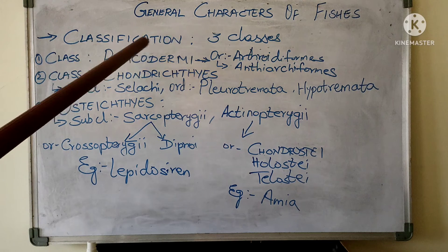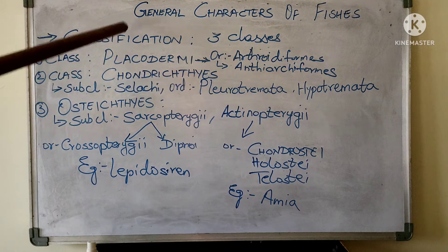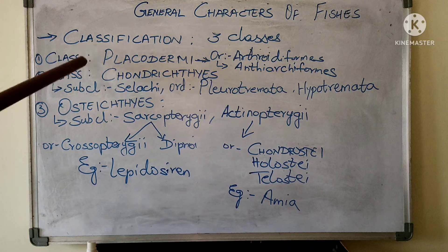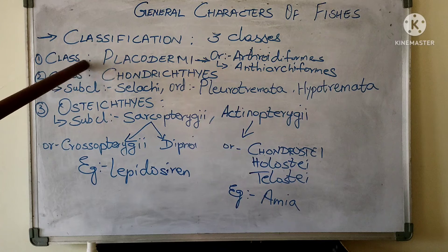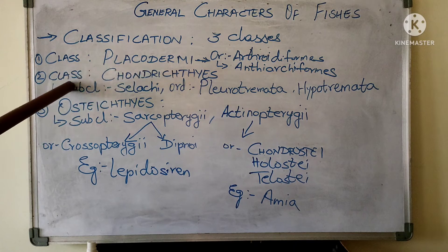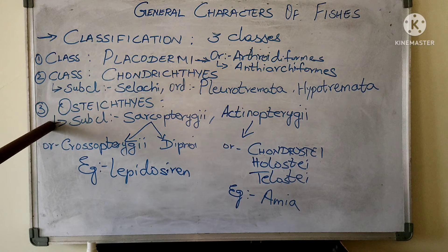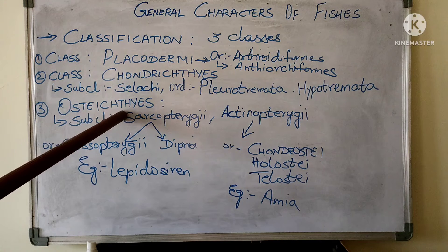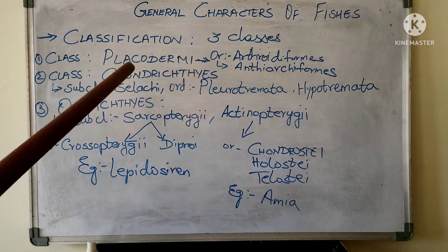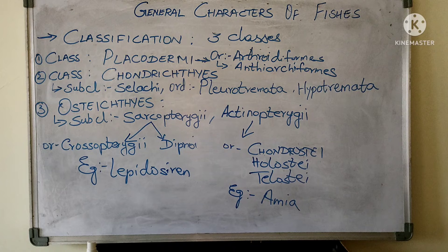Coming to the classification of fishes, fishes are divided into three main classes. Class 1 is Placodermi, the second class is Chondrichthyes, and the third one is Osteichthyes. Now we are going to see each one separately. What is class Placodermi?